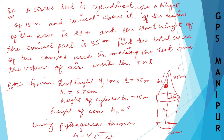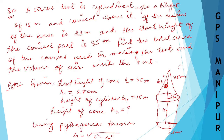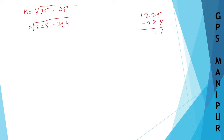H2 = √(L² − R²) = √(35² − 28²) = √(1225 − 784) = √441 = 21 meters. So I got height H2 as 21 meters. I know the height now.